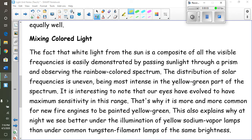All right, so here we are in the third video. To begin, we're going to talk about mixing light. The fact that white light from the sun is a composite of all the visible frequencies is easily demonstrated by passing sunlight through a prism and looking at the rainbow spectrum. The distribution of solar frequencies is uneven, the most being in the yellow-green part of the spectrum.